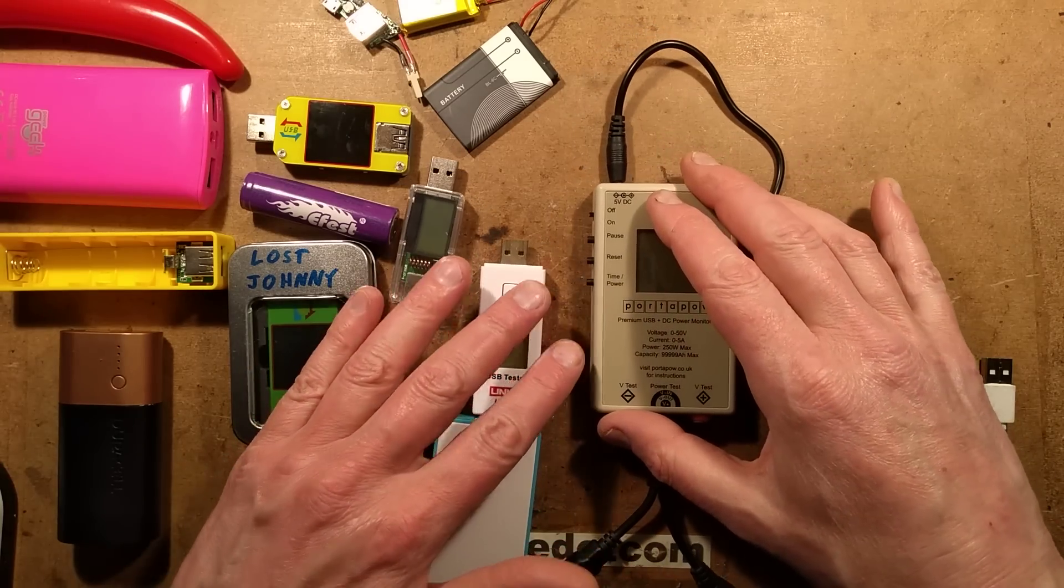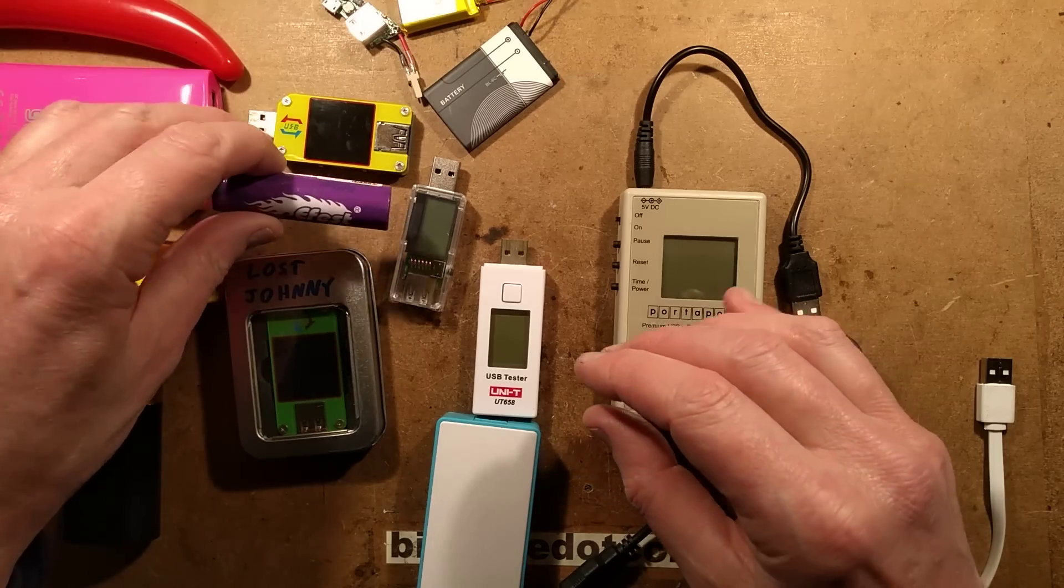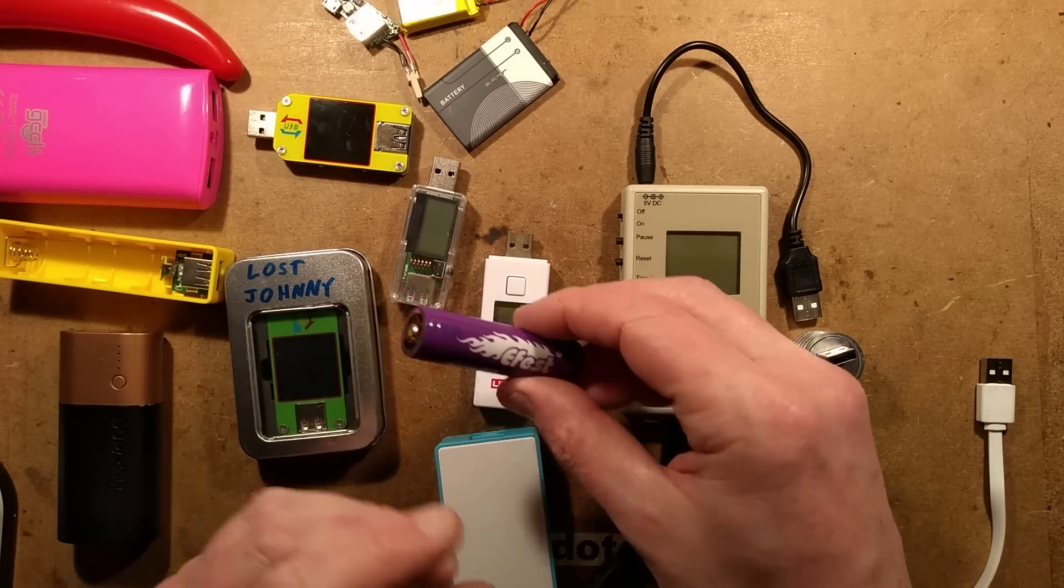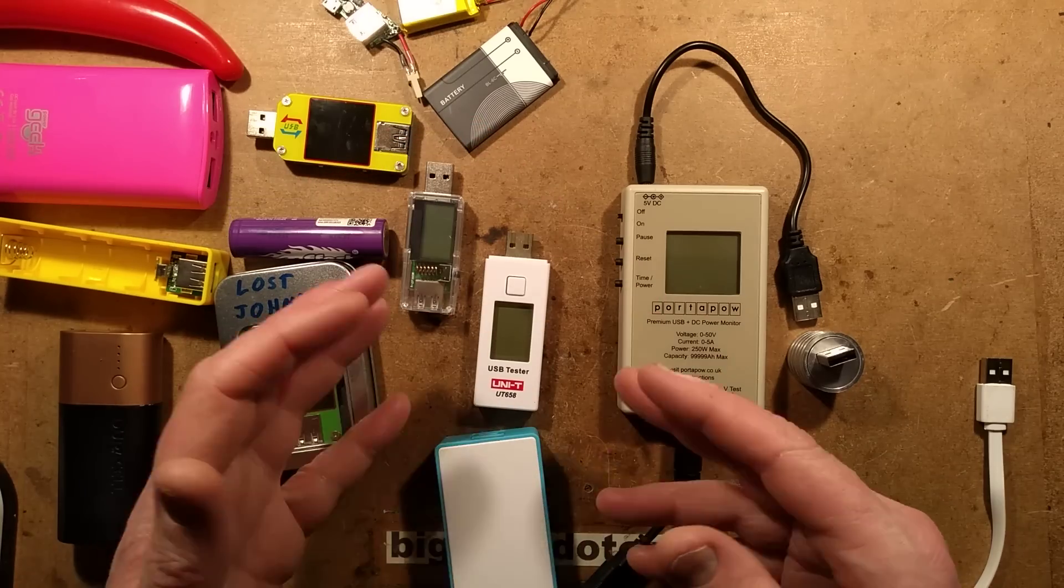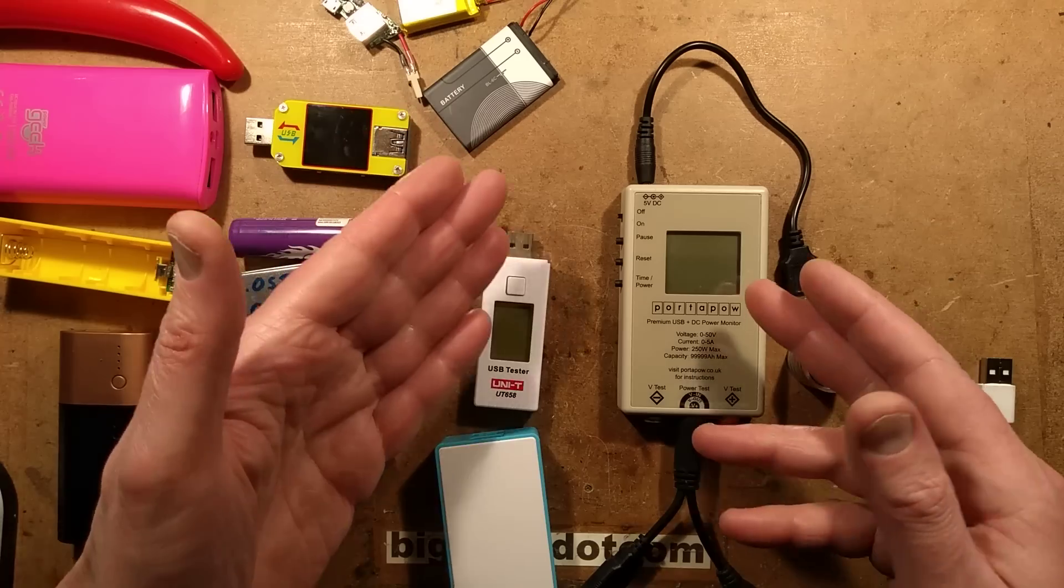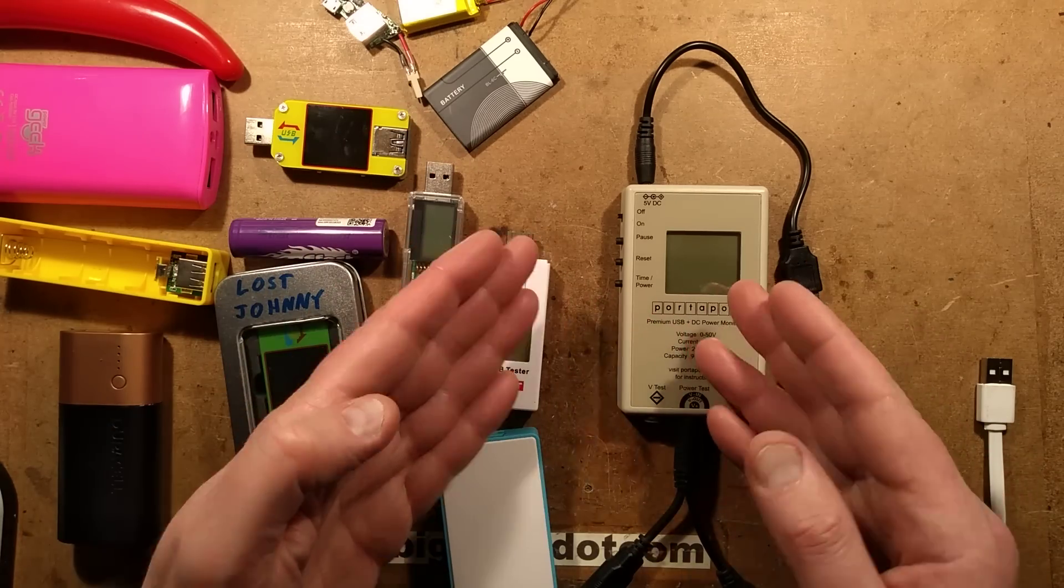A question I get asked quite a lot is how I test things like power banks or lithium cells for their capacity. The answer is that I use a milliamp power meter. You could do it manually, but these things are very useful in the sense that they monitor the current over time.